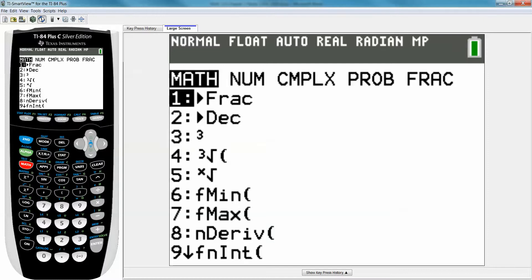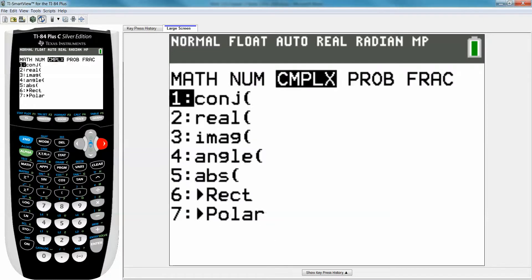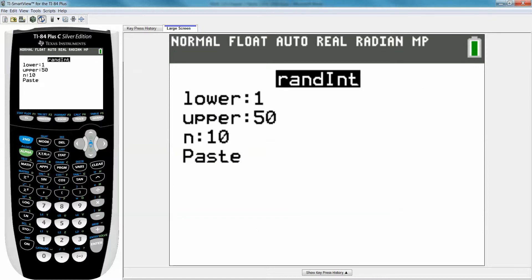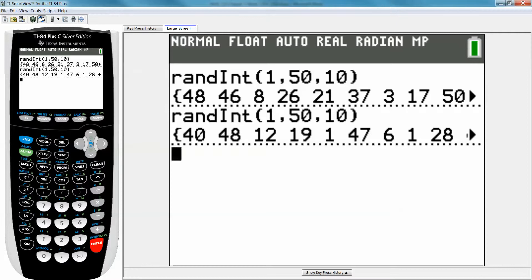Let me do it again. So math. Go to the right to the probability menu. Pick number 5. You can actually just press the number 5, and it'll automatically choose it. 1, 50, 10. Go down to paste, enter, and there you go. Nice.